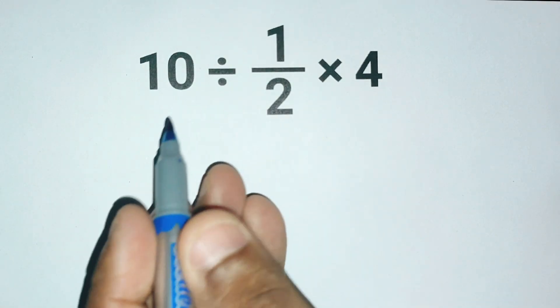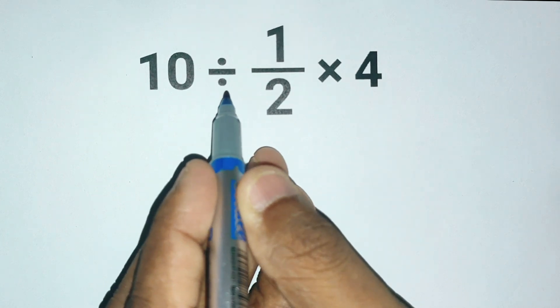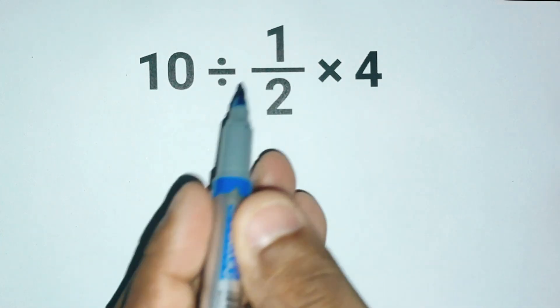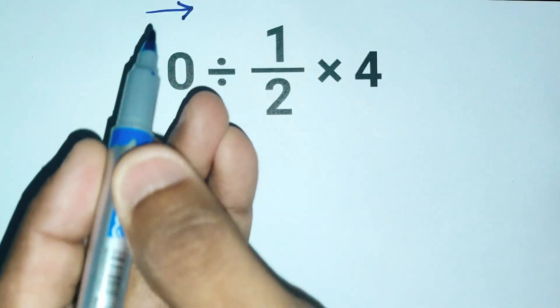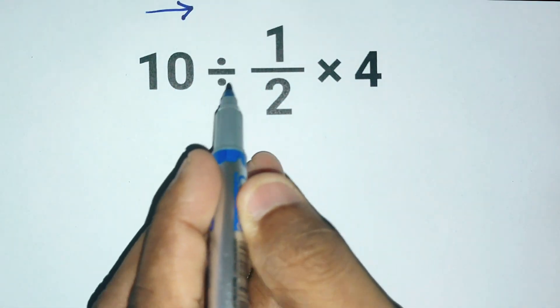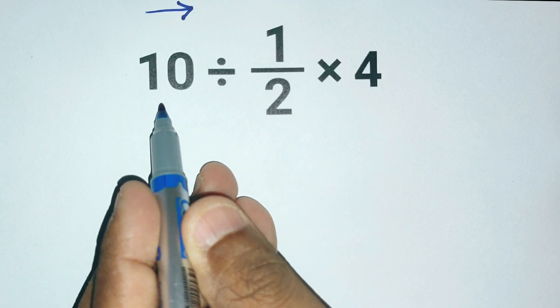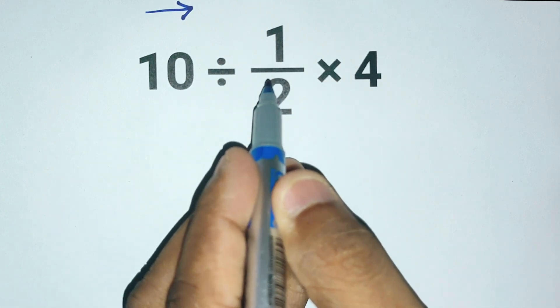Because according to the order of operations, division and multiplication have the same priority and we have to work from left to right. So first we do the division, that means we start with 10 divided by 1 over 2.